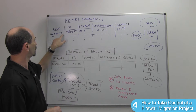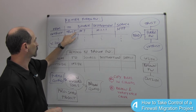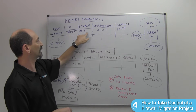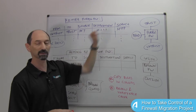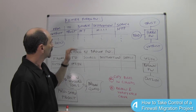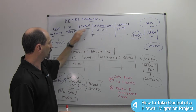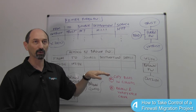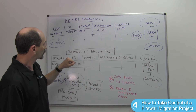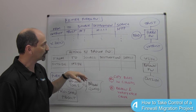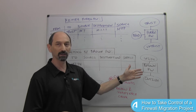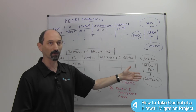You have rules from the untrust zone to the trust zone with source any and destination something. If you try to convert that to the brown firewall's environment, you have to take into account also the topology of the brown firewall.